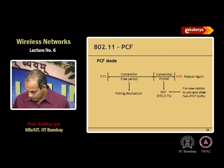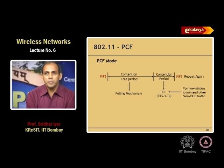In PCF polling, priorities can theoretically be set by polling a high-priority station more often. The access point decides the schedule and can poll one station twice as often as another. The 802.11 standard does not specify whether scheduling should be round-robin; it just says some scheduling algorithm should be implemented for deciding the polling order.